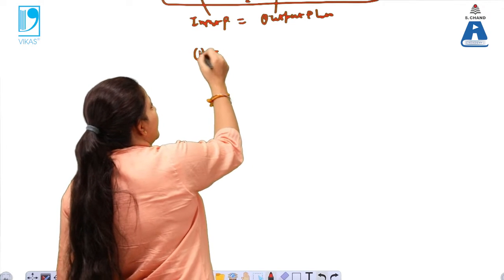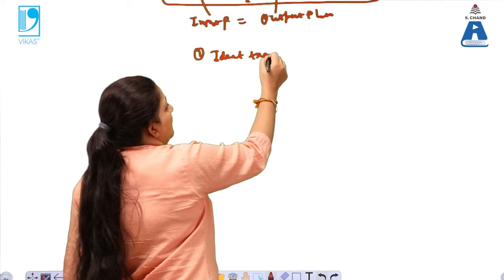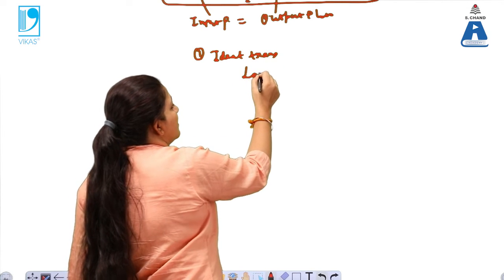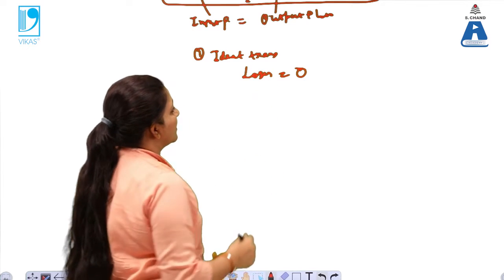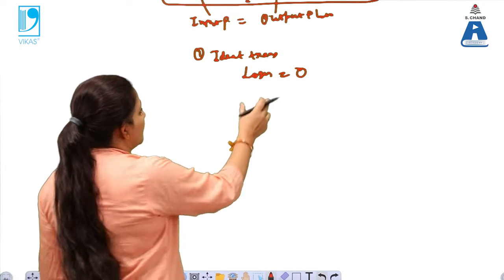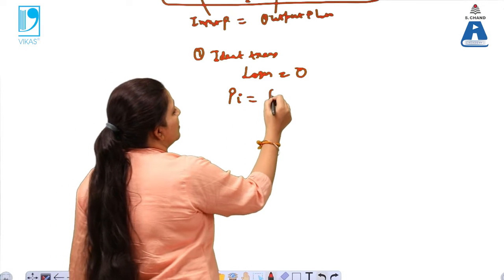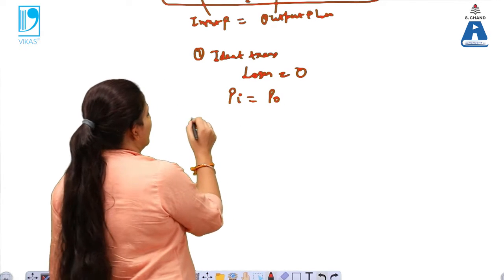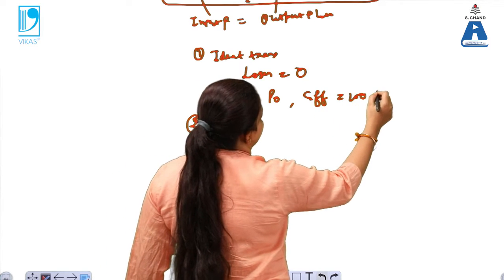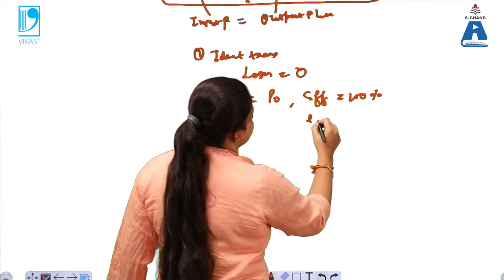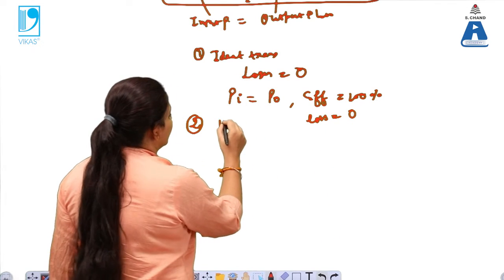In the case of an ideal transformer, losses are zero — though practically this is not so. If losses are zero, then P_input equals P_output, efficiency of the device is 100%, and loss is zero.